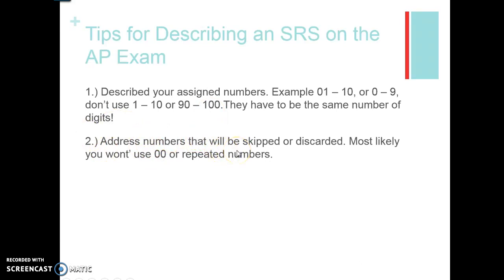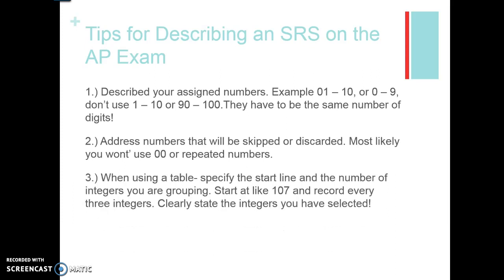You always want to think about numbers that are going to be skipped or discarded. Most likely you won't use 00 or repeated numbers. If you're choosing people from a sample, you're not going to use repeated numbers — if Susie is 01 and 01 is chosen twice, we can't have her twice in the sample. So you discard repeated numbers. When you're using a table, also specify what line you're starting at. Tables are labeled like line 101, 102. Say start at line 107 and record every three integers — which means you've assigned numbers like 100 to 150. Then state the integers you've selected, like 100, 122, and 135.